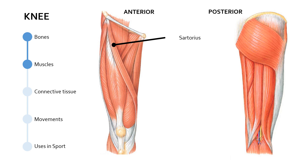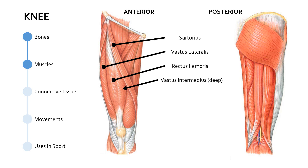We've also got four other key muscles to mention. The vastus lateralis, the rectus femoris, underneath which is the vastus intermedius — which is deep to the rectus femoris, simply meaning underneath it — and the vastus medialis. You'll probably know that these four muscles are collectively referred to as the quadriceps muscles.